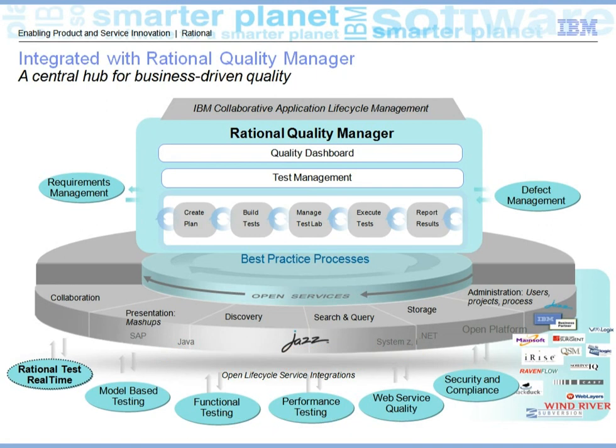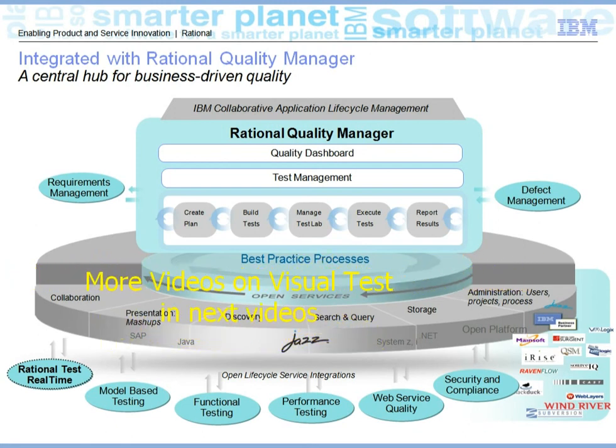You can see all of this in Rational Quality Manager, which is the quality management tool. It allows you to write a test plan, write test cases, manage your labs, and execute them. RTRT generates test reports, and if any defects are found, you can submit them to the defect management tool.